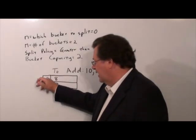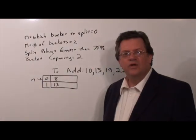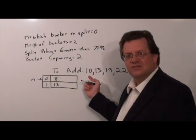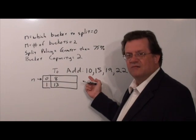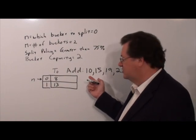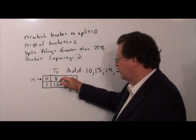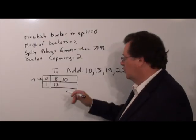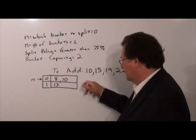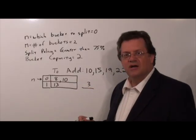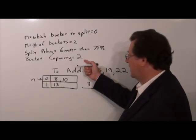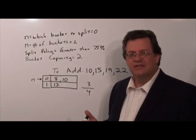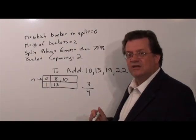First of all, our n will be pointing to bucket number 0, so if we need to do a split that's where it'll occur. Working with the value 10, we do 10 mod 2 which gives us a remainder of 0, so we place the 10 in bucket 0. Now to determine whether or not we need to do a split, we count up the number of items — in this case 3 — and divide by the number of buckets (2) times the bucket capacity (2), so it's 3 over 4. Now 3 over 4 is 75 percent; it doesn't exceed it, so we're okay and we don't need to do a split.